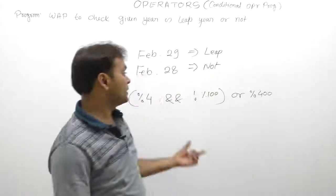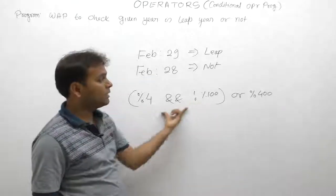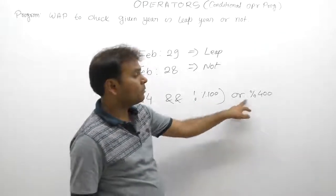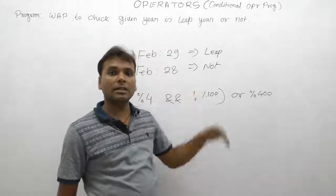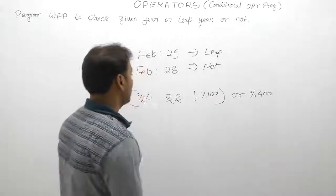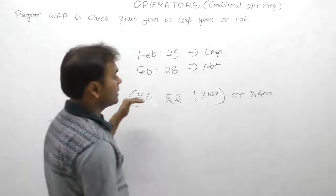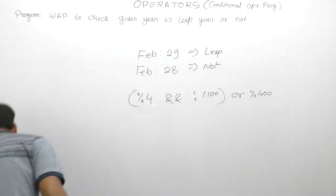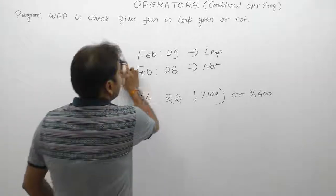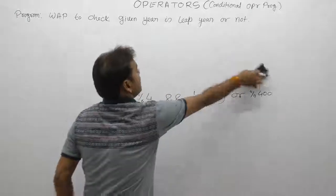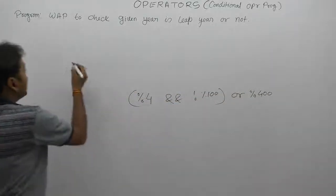Or year should be multiple of 400. Here, how to write this application in the form of C language? First of all, we have required one input variable called as year.